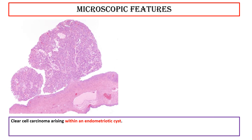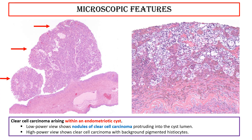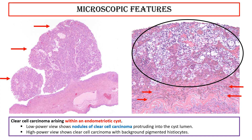This photo shows clear cell carcinoma arising within an endometriotic cyst. Low-power view shows nodules of clear cell carcinoma protruding into the cyst lumen. High-power view shows clear cell carcinoma with a background of pigmented histiocytes.